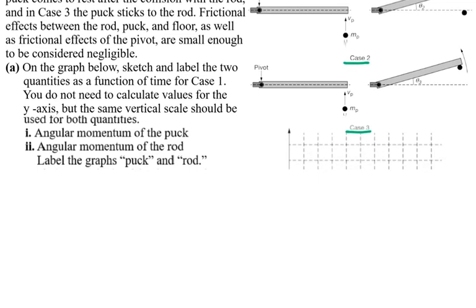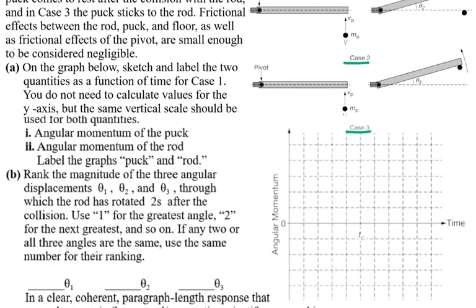Here is the graph we're going to be using. Sketch and label two quantities as a function of time for Case 1. You do not need to calculate values for the axes, but the same vertical scale should be used for both quantities: the angular momentum of the puck and the angular momentum of the rod. Label the graphs 'puck' and 'rod.'